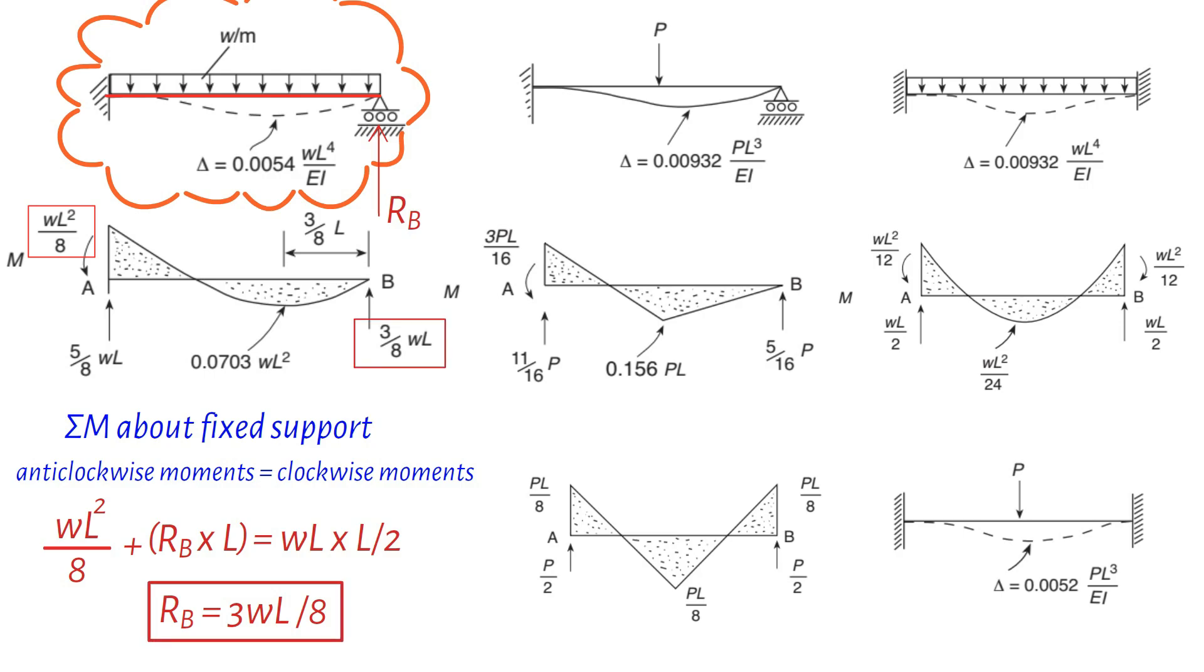Vertical equilibrium helps us determine the reaction at the fixed support. However, settlement can significantly affect the behavior of the propped cantilever structure. If the propped end settles, Rb decreases, leading to an increase in the reaction at point A to maintain vertical equilibrium.